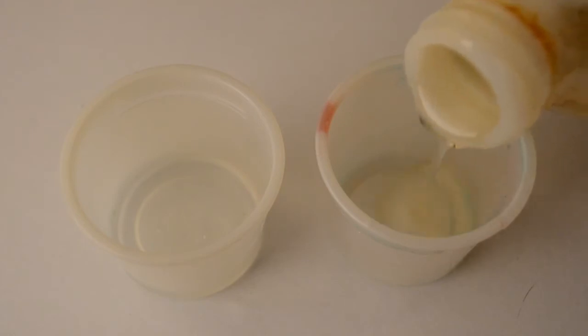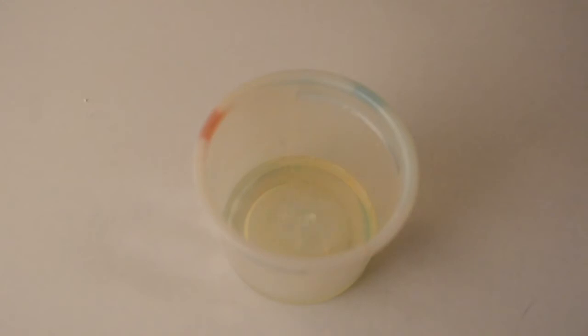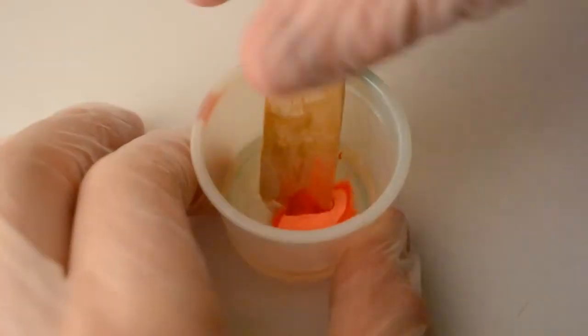Next, I measured out part B or the hardener. Once again, I do this all by eye because this resin is a 1 to 1 ratio. Then I mixed them together. I added orange glow powder and a drop of yellow food coloring as its pigment. And then I mixed it thoroughly.